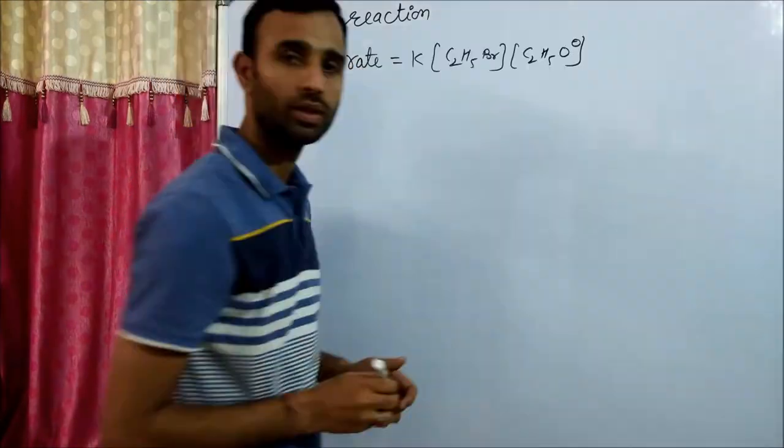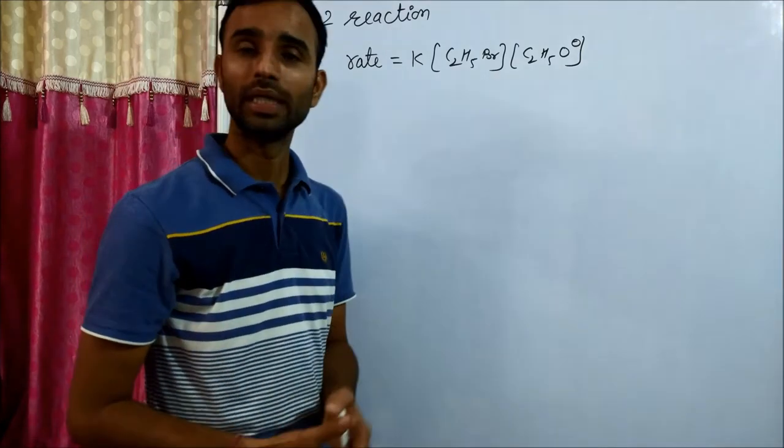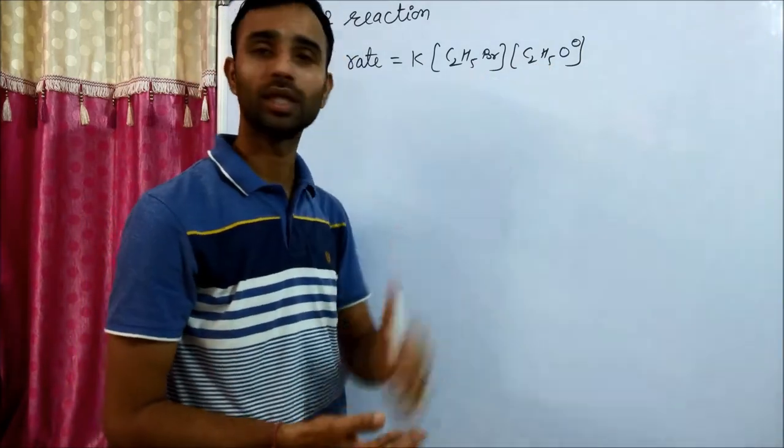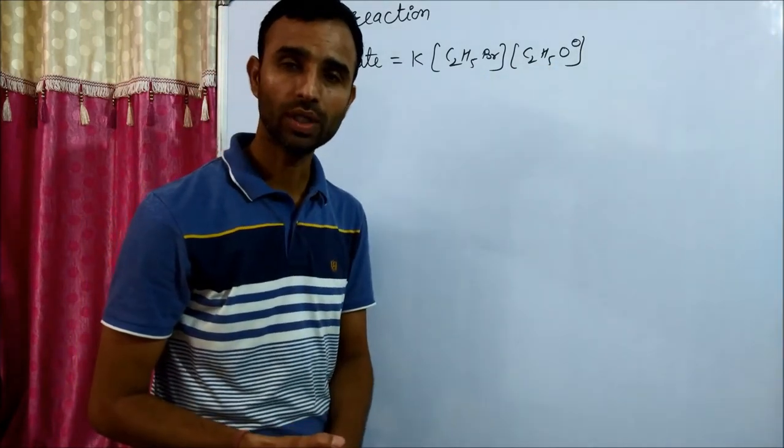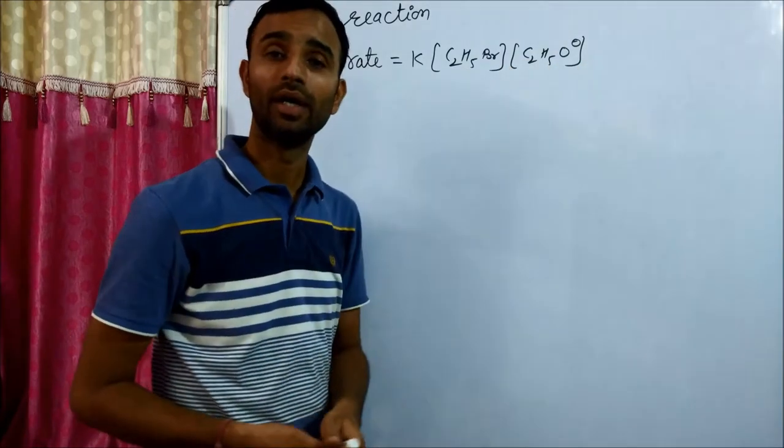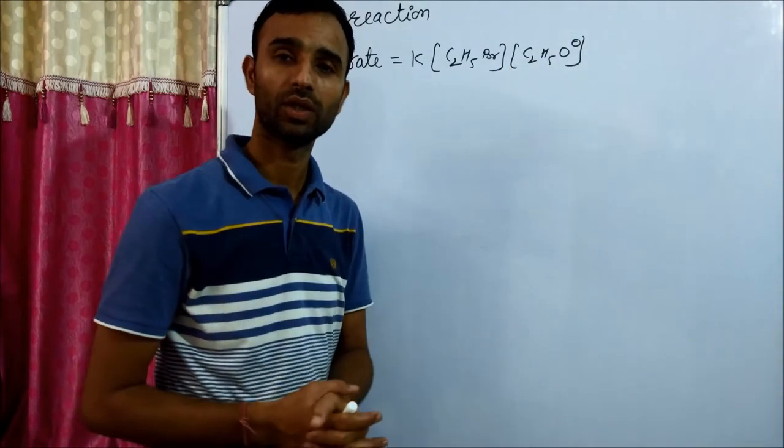In this reaction, rate of reaction depends on both ethyl bromide as well as ethoxide ion, because ethoxide ion is involved in the rate determining step.